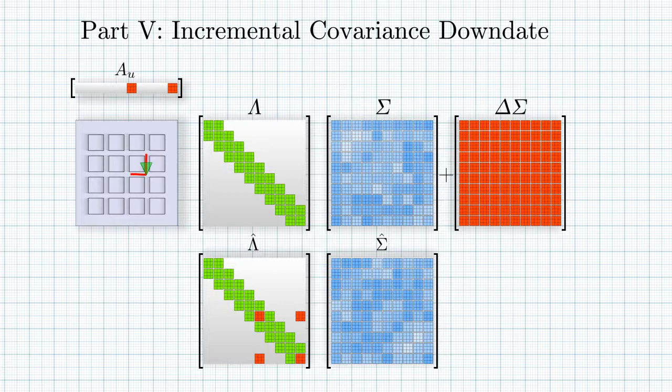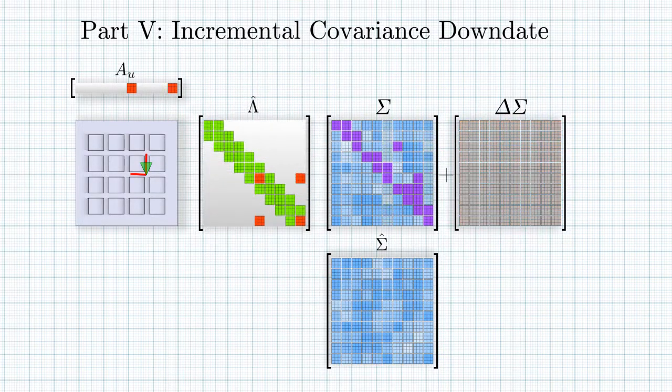A few more algebraic manipulations will show you how. To calculate the increment delta sigma, we need several but few block columns of the old sigma, the ones corresponding to the update variables. We can actually solve the old system only for those columns. But the problem is that by now, the old system is not available anymore. We already have the new updated system.